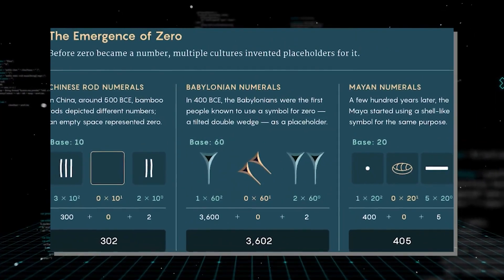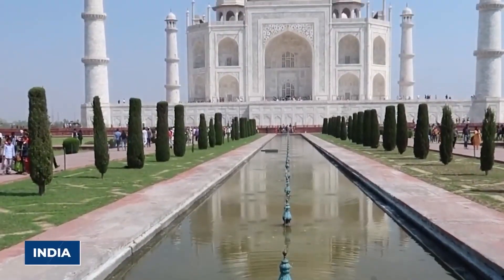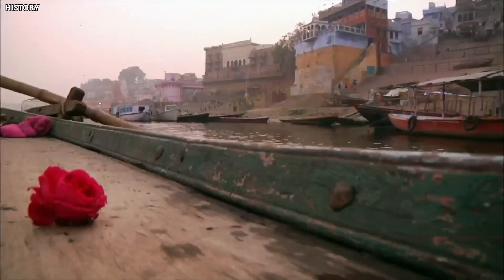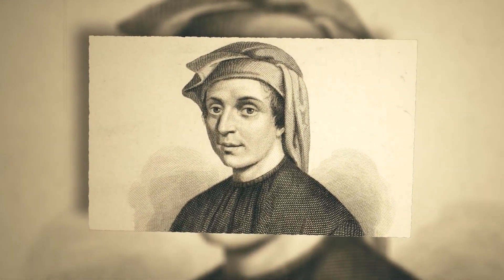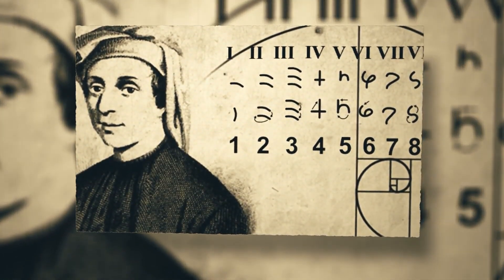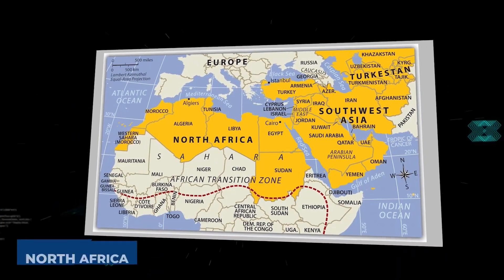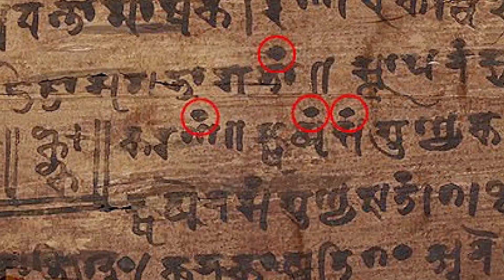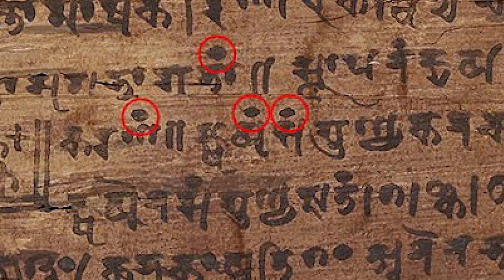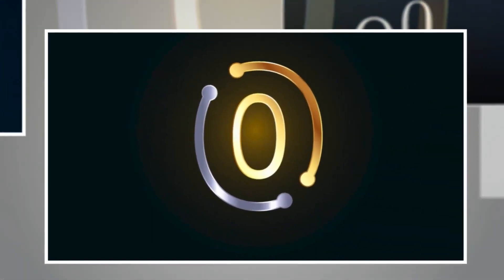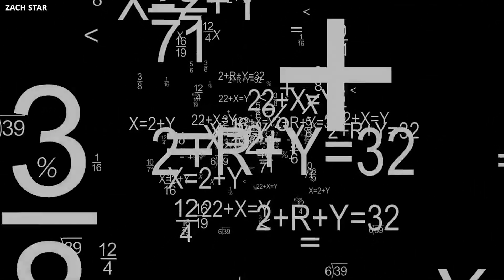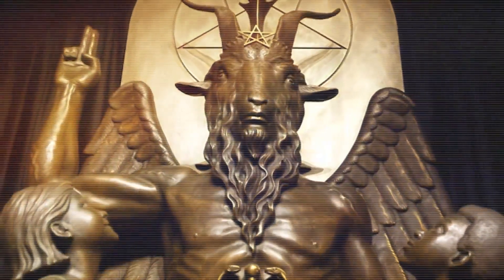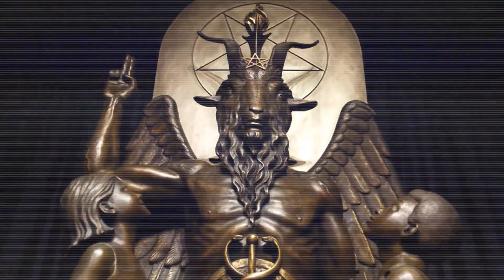Zero first spread beyond India to the Arab world, where it gained further recognition. By the 13th century, Fibonacci, a traveler and mathematician, brought zero and the base-ten number system to medieval Europe after encountering it in North Africa. At first, zero was met with skepticism and confusion. Its ability to represent nothing challenged deep-seated theological and philosophical ideas. The Church, in particular, resisted the concept, associating it with chaos and disorder. Many theologians even regarded zero as the devil's number.